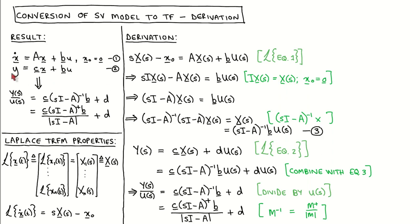We now apply the Laplace transform to equation 2, which gives us this line. We then eliminate X(s) by substituting equation 3, which results in this line. Since the Laplace transform of the input is a scalar signal we can divide by U(s) to get the first part of the result. Since the inverse of any non-singular matrix is the adjoint of the matrix divided by its determinant, we can rewrite the inverse of (sI − A) as the adjoint of (sI − A) divided by the determinant of (sI − A) to get the second part of the result.